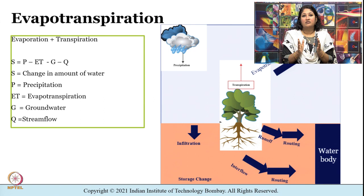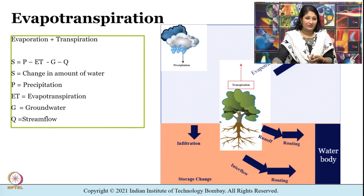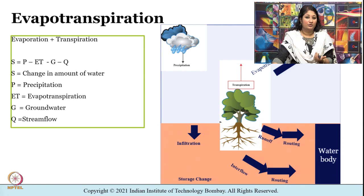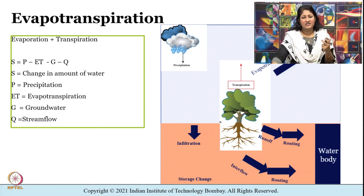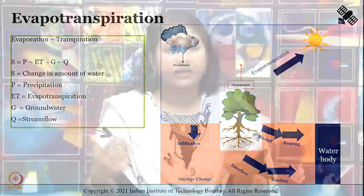ET is not easy to measure directly; it can be measured experimentally but that is expensive and subject to error. Usually we calculate it indirectly — if water in equals water out, then the change in water storage S must equal precipitation P minus ET minus groundwater G minus streamflow Q. Of these we can easily measure Q, G, P and S, which means we can solve for ET. There are also flux towers that can be installed which give more accurate information about ET.